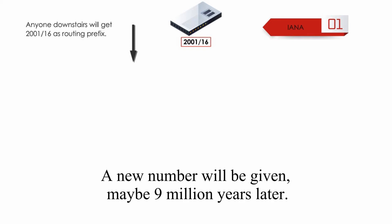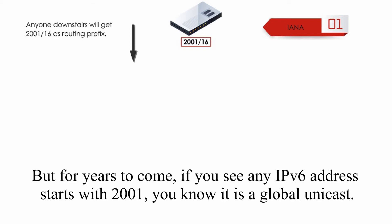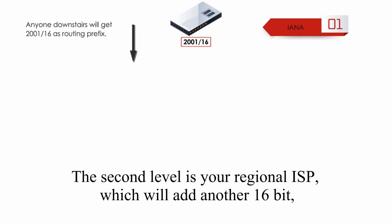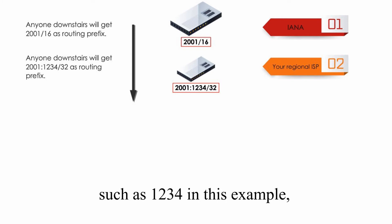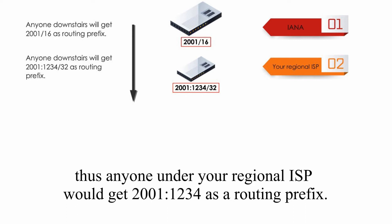A new number will be given maybe 9 million years later. But for years to come, if you see any IPv6 address starting with 2001, you know it is a global unicast. The second level is your regional ISP, which will add another 16-bit, such as 1234 in this example. Thus, anyone under your regional ISP would get 2001:1234 as routing prefix.